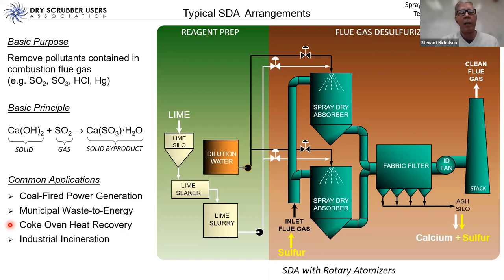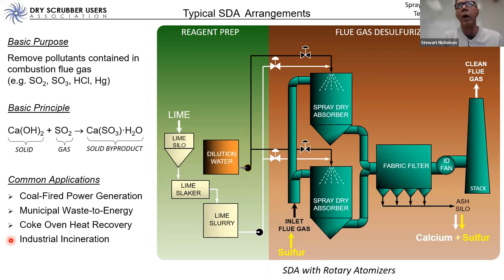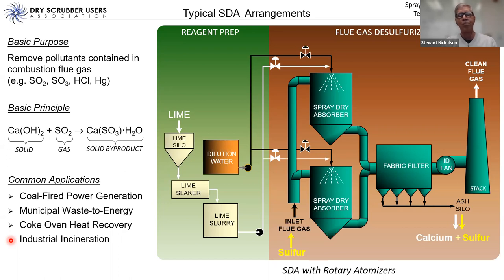Finally, industrial incineration — including hazardous waste incineration — uses a few spray dryers, though they are not as common as other dry scrubber technologies like circulating dry scrubbers or dry sorbent injection systems. Today we're focusing specifically on the spray dryer absorber configuration, not those other types.